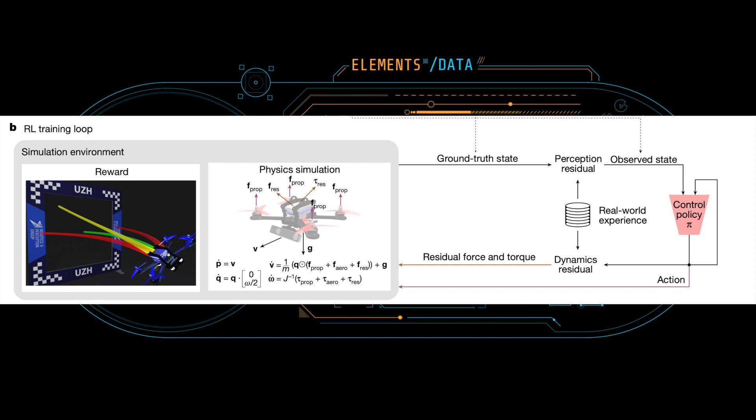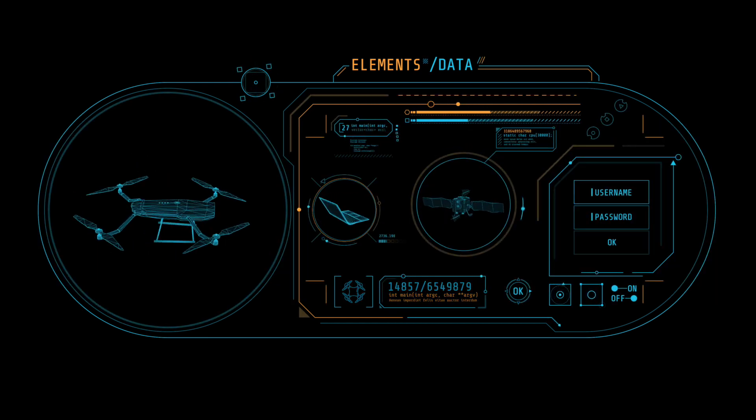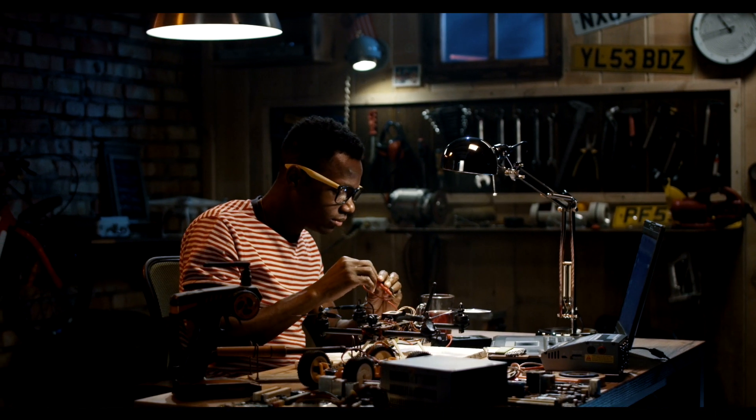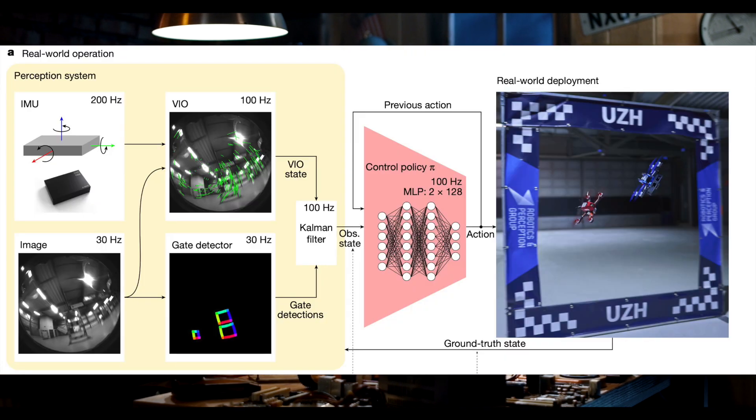Reaching the level of professional pilots with an autonomous drone is challenging because the robot needs to fly at its physical limits, while estimating its speed and location in the circuit exclusively from onboard sensors. Elia Kaufmann and colleagues designed an autonomous system that can race physical vehicles at the level of human world champions.